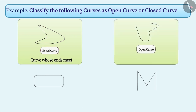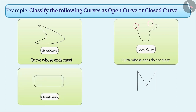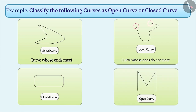This is an open curve because the ends of the curve are not joined. Curves whose ends are not joined are called open curves. This is a closed curve because the ends are joined. This is an open curve because its ends are not joined.